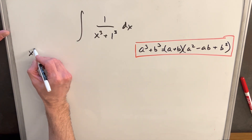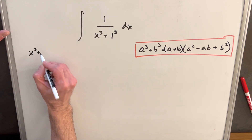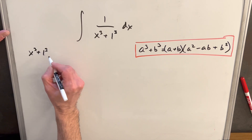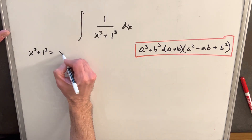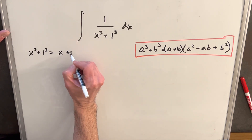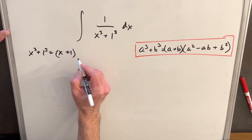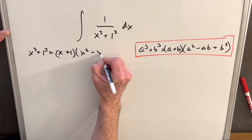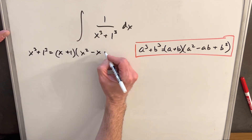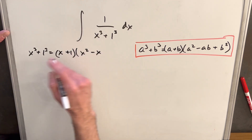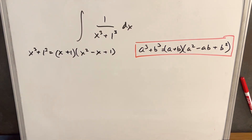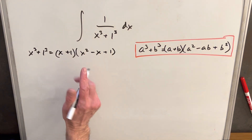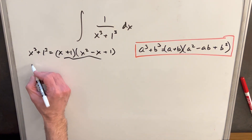Just focusing on our denominator, let's match this form. We're going to have x plus 1, then x squared minus x times 1 — we'll leave off the 1 — and then 1 squared is just 1. Next, I'm going to rewrite the integral with our denominator in this factored form.